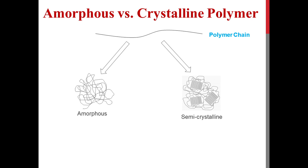The first factor which controls this behavior is monomer type. As previously mentioned, different monomers lead to differences in polymer chain rigidity and intermolecular chain interaction. Monomers which lead to polymer chains with higher chain rigidity and poor intermolecular chain interaction form amorphous polymers, because the chain cannot bend or fold to form an ordered crystalline phase.